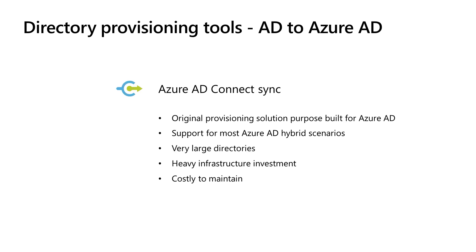Azure AD Connect Sync, which was also called DirSync and AD Sync in its earlier life, was the first solution built for provisioning from Active Directory to Azure AD. It currently has support for the most Azure AD hybrid scenarios, and it can support organizations with very large directories. While Azure AD Connect Sync may be robust in its capabilities, it can also require a heavy investment in infrastructure resources, be complicated to configure, and result in higher maintenance costs. While it is currently the most utilized provisioning solution of the three mentioned and is still very useful to many of our customers, we felt that we needed to build something better — something that is more cloud-driven and requires less of an investment to deploy and support.